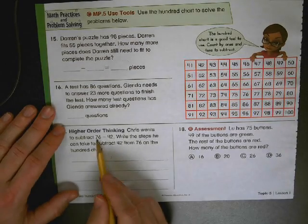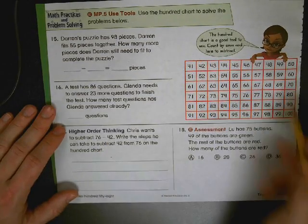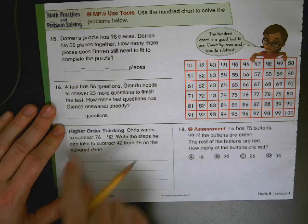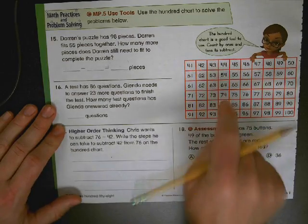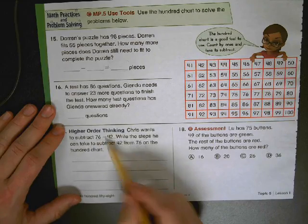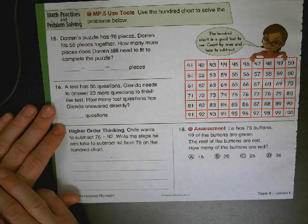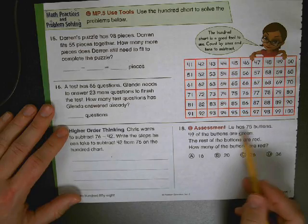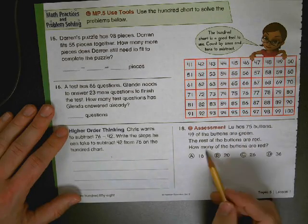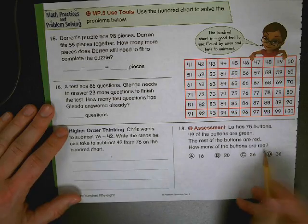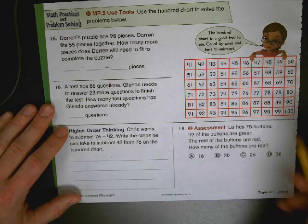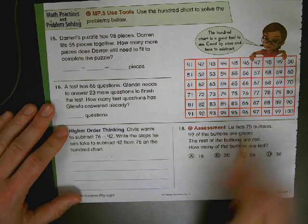Down here it says, Chris wants to subtract 76 and 42. Write the steps. What would you do first? What would you do second? What would you do third? Here it says write the steps. One, two, three on the hundreds chart over here. So write start at 76, go back 42. Write how you would do it. We did a couple on the front. Down here it's 75 buttons. 49 of the buttons are green. The rest are red. How many of the buttons are red? 75 minus 49. Use the hundreds chart. It's going to be one of these answers. Show your work up here.